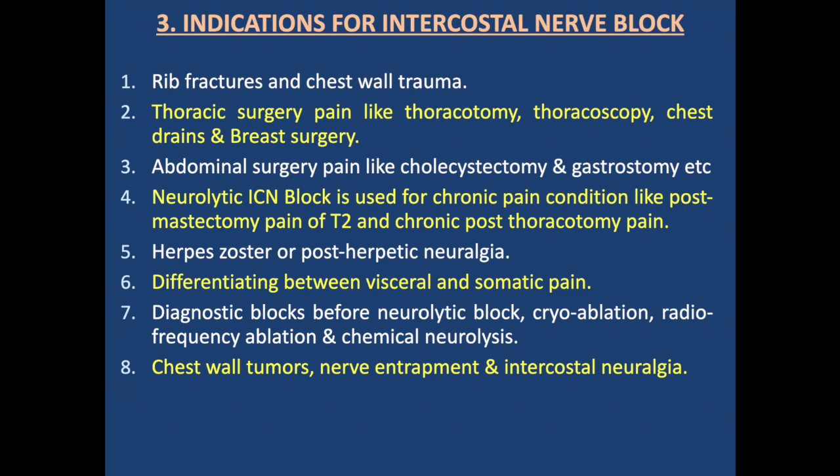Indications of intercostal nerve block include: rib fractures and chest wall trauma; thoracic surgery pain such as thoracotomy, thoracoscopy, chest drain, and breast surgery; abdominal surgery pain such as cholecystectomy and gastrostomy; neurolytic block for chronic conditions like post-mastectomy pain and chronic post-thoracotomy pain; herpes zoster or post-herpetic neuralgia; differentiating visceral from somatic pain; diagnostic block before neurolytic block, cryoablation, radiofrequency ablation, and chemical neurolysis; and chest wall tumors, nerve entrapment, and intercostal neuralgia.